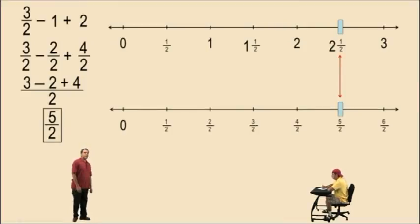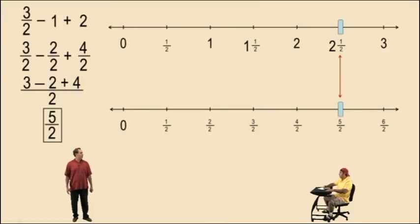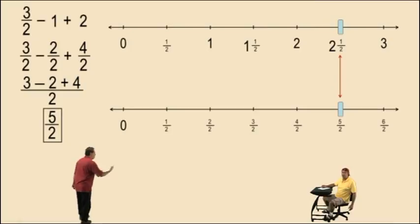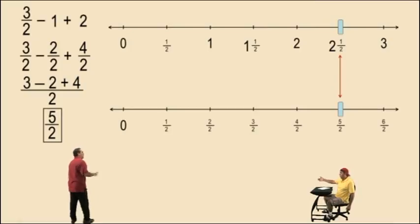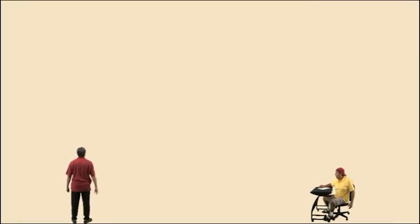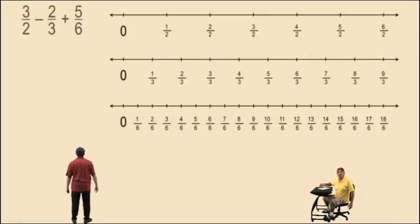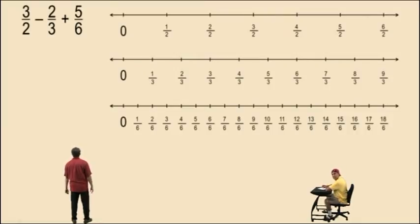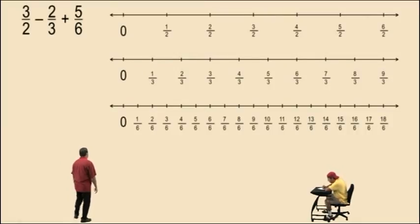I know you're all asking, well, what about the problems where the denominators are different? Yeah, what about those problems? I'm getting to those, Charlie. Don't worry. Okay, so let me do one for you, your majesty. Alright, let's get started right here. Let's try this problem: 3 halves subtract 2 thirds plus 5 sixths.